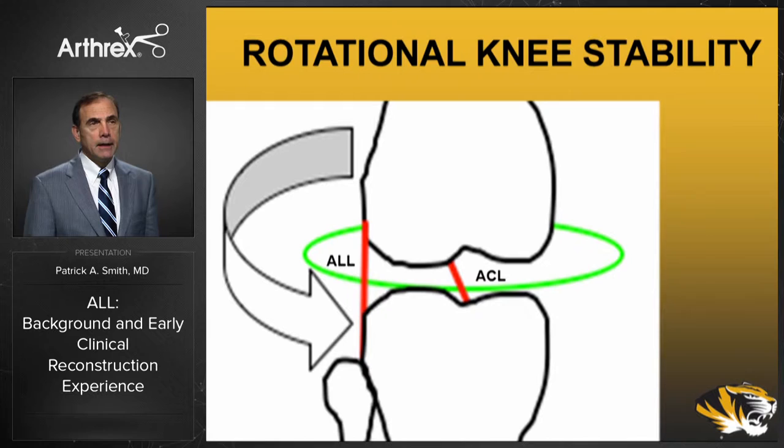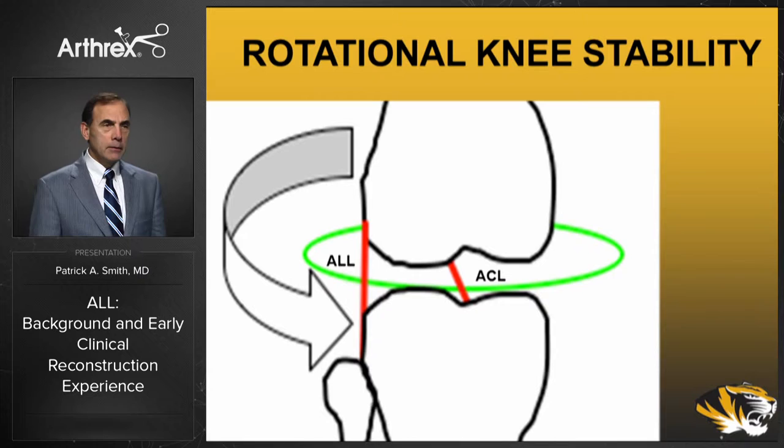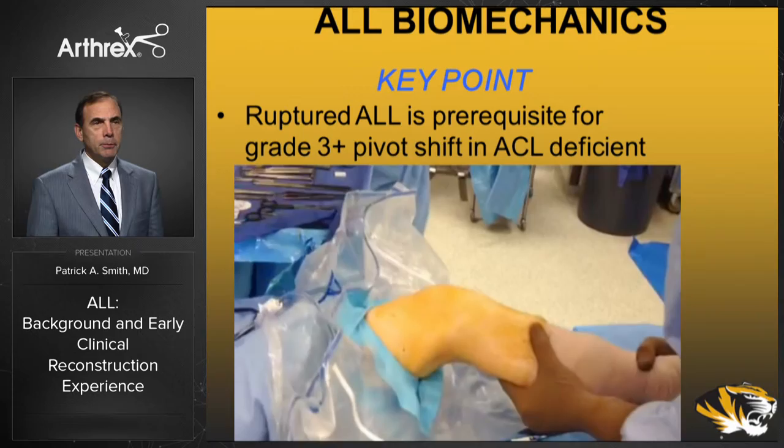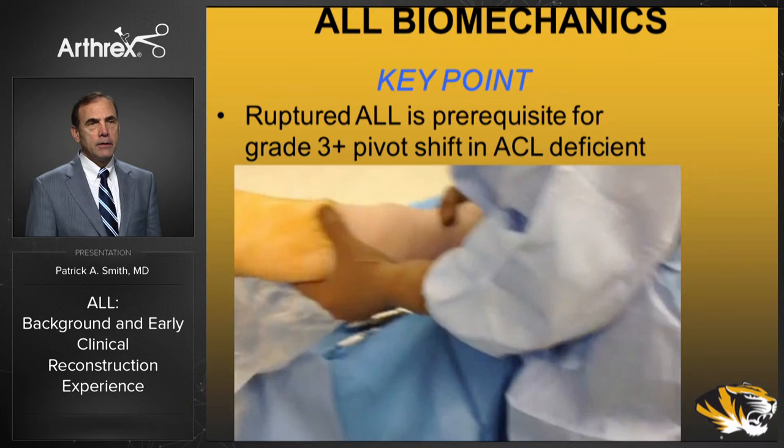When trying to control rotational instability and the pivot shift for athletes returning to play, placing a central ACL across the knee — even more anatomically laterally on the femoral wall as we do nowadays — is still tough for controlling the rotational moment. But if you add the ALL on the lateral side, you can appreciate that it should have a definite benefit on rotational stability. So when you have that three plus pivot shift clunk, I think these are the cases where we need to think about doing more than just ACL reconstruction.